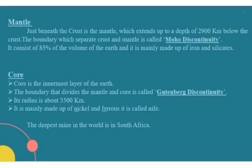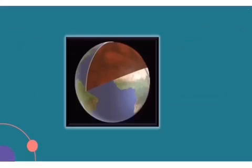The boundary that divides the mantle and core is called the Gutenberg discontinuity. The deepest mine in the world is in South Africa. It is about 4 km deep. To reach the center of the earth, we would have to dig a hole about 6,000 km deep.